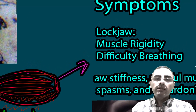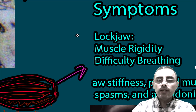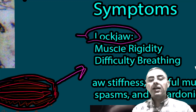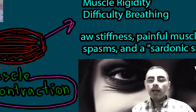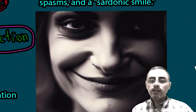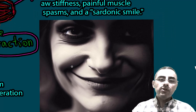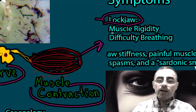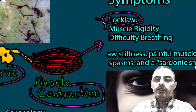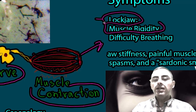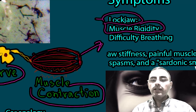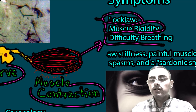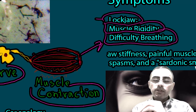The three most important symptoms arise from these muscle contractions. First is lockjaw, which is the hallmark of the disease, and the sardonic smile or sardonic face, visible in the image, results from it. Second is muscle rigidity, especially of the abdominal muscles and neck muscles.